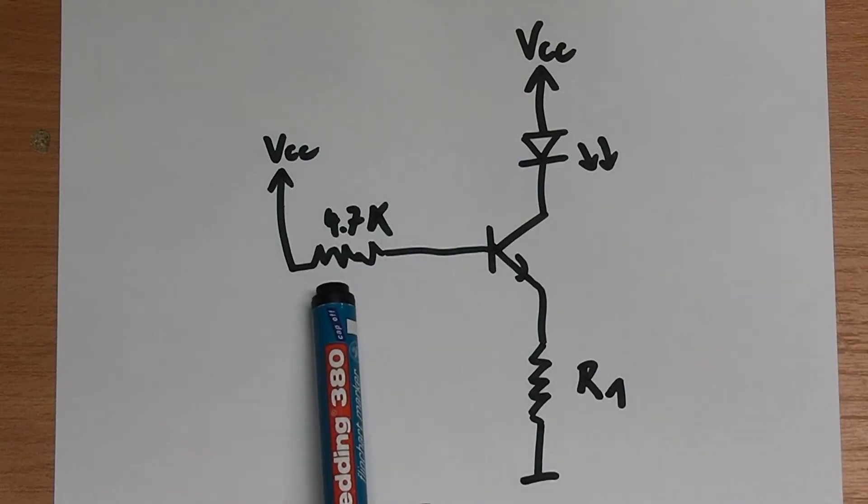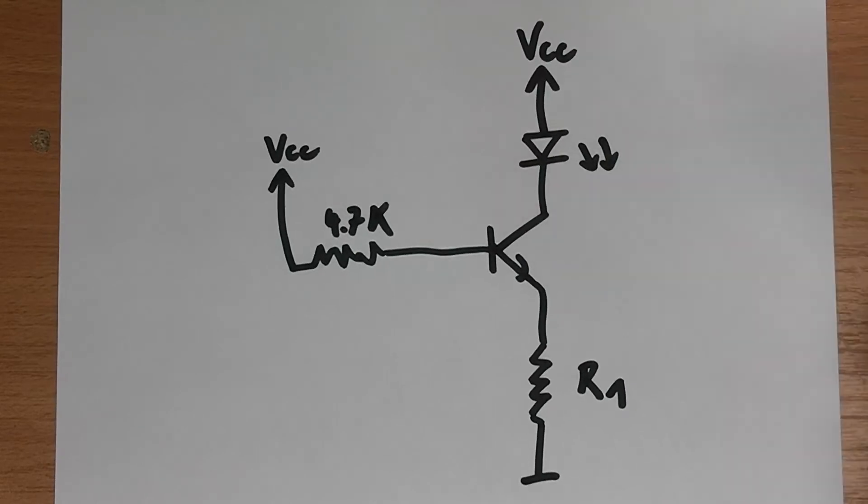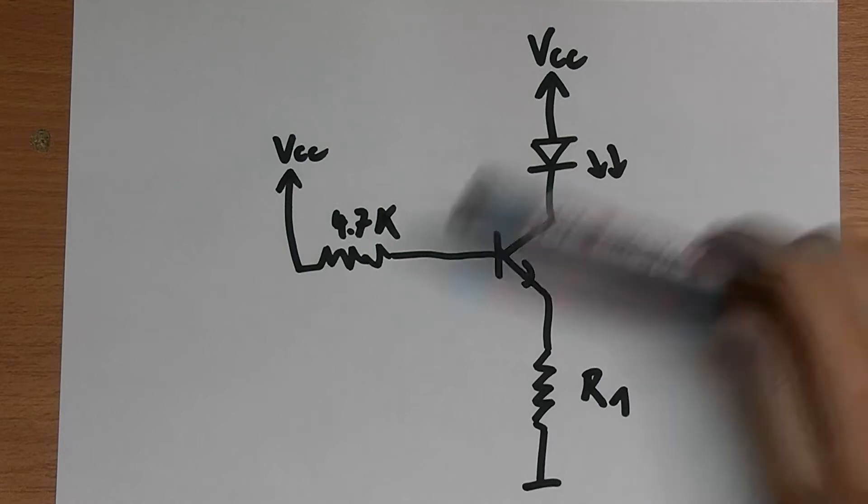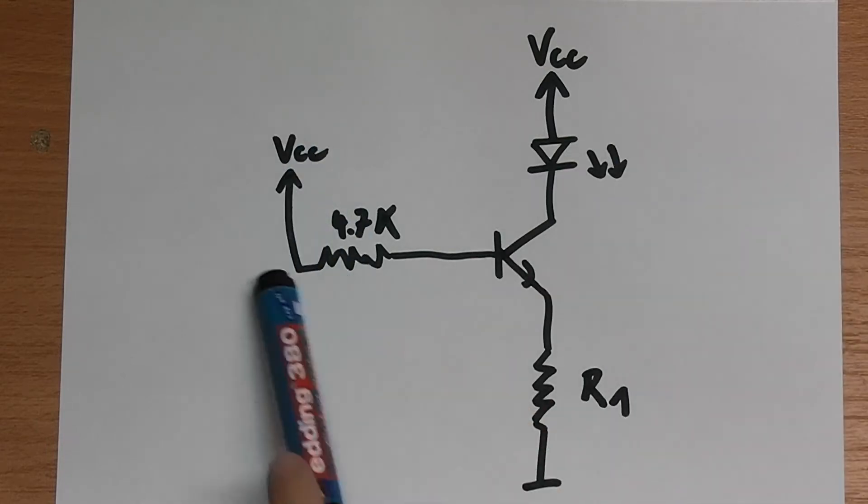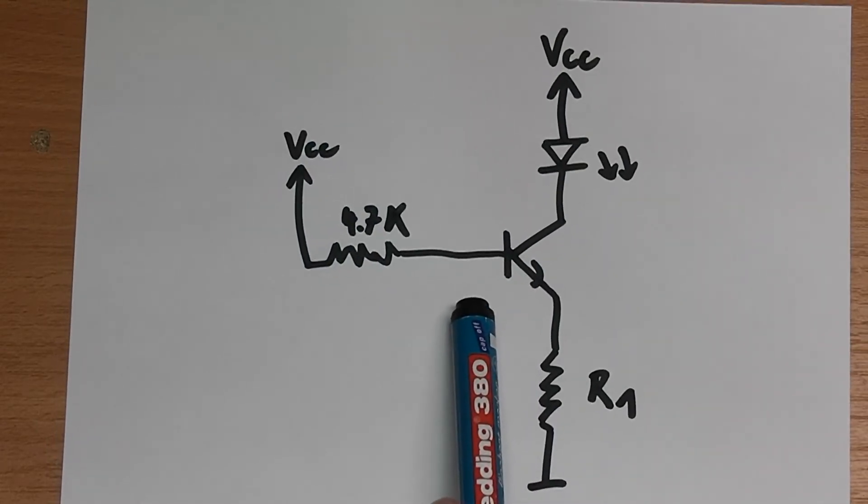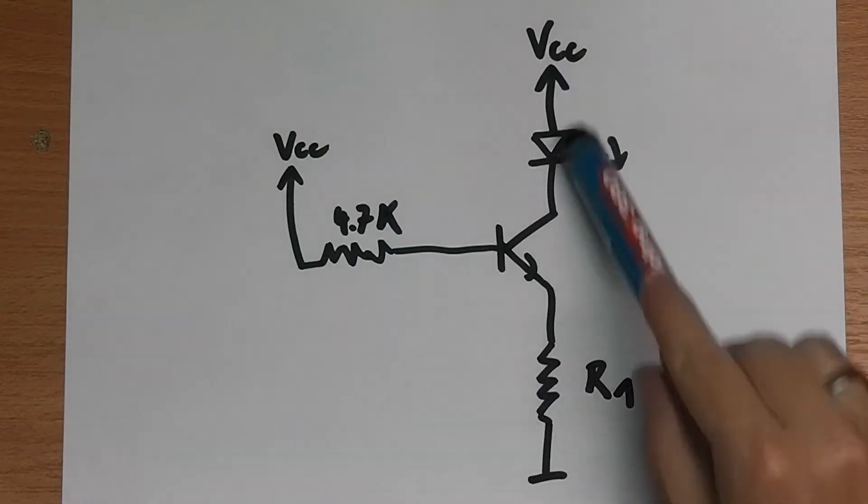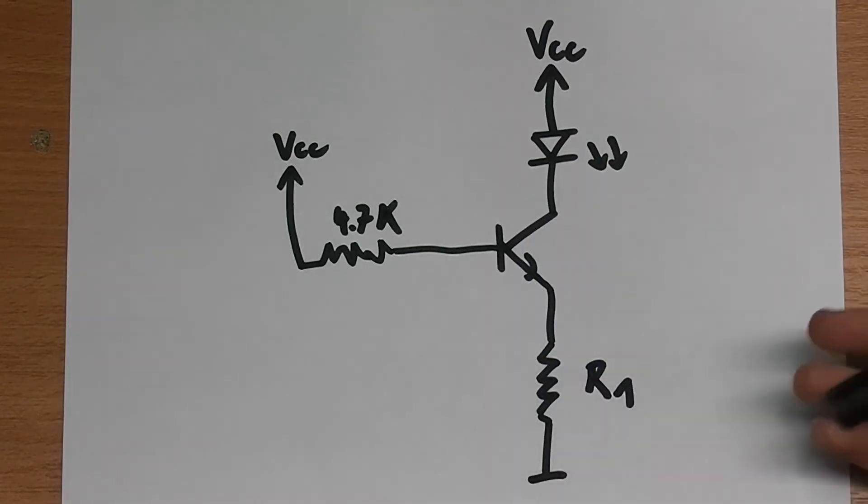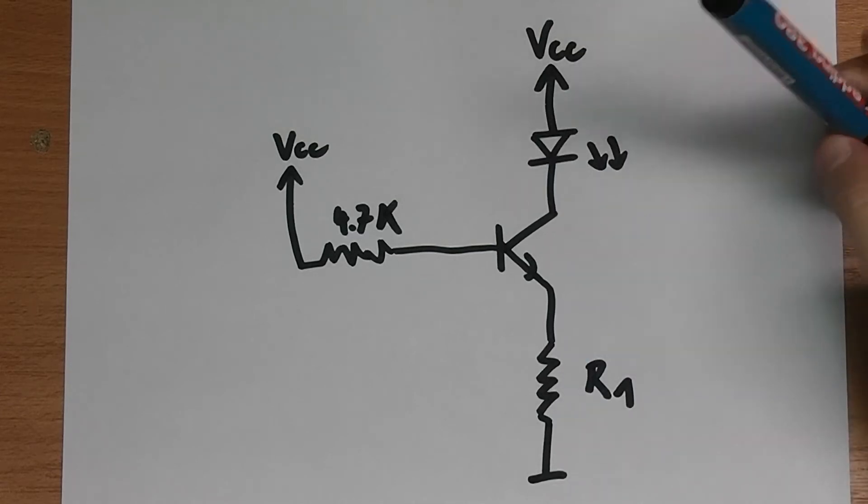We have a 4.7k resistor here and we have a NPN transistor here and this is a resistor R1. Now this circuit is not complete yet. If you just look at this circuit you will see that basically the transistor will be turned on continuously because of the 4.7k pull up and the LED or there will be a current running through the LED which is limited by R1. Now this is not a constant current source yet because the current that flows this path here also depends on the LED itself.